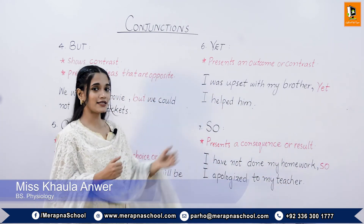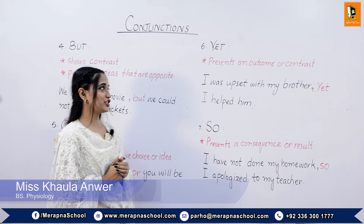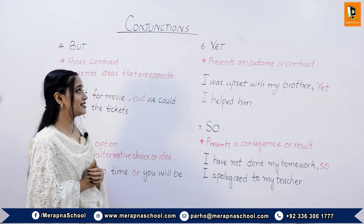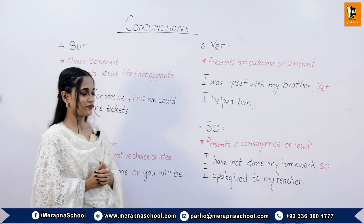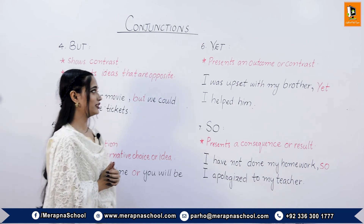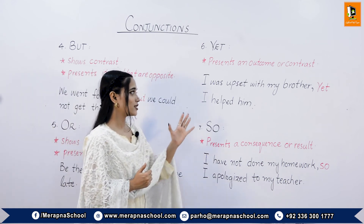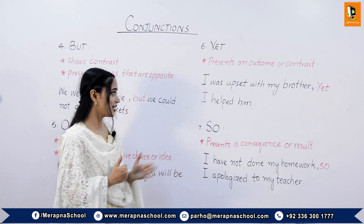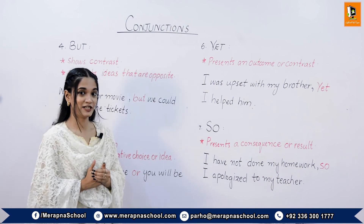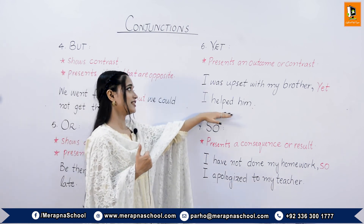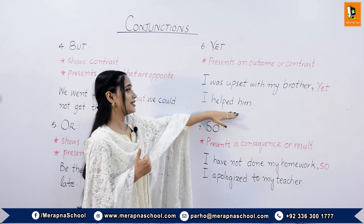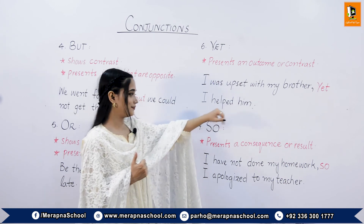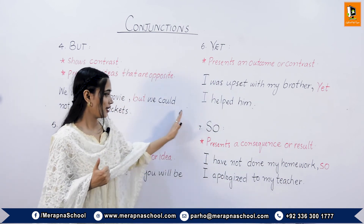The sixth coordinating conjunction is 'yet'. It presents an outcome or contrast. For example: 'I was upset with my brother yet I helped him.' The second half of the sentence is showing the contrast or outcome.